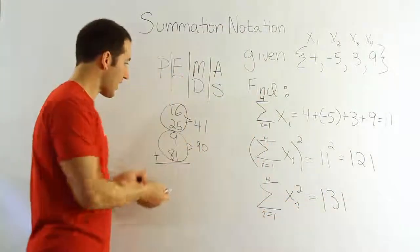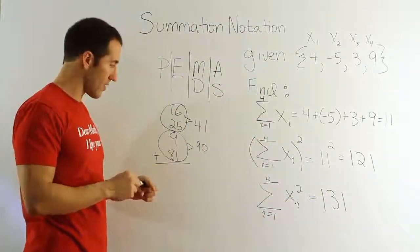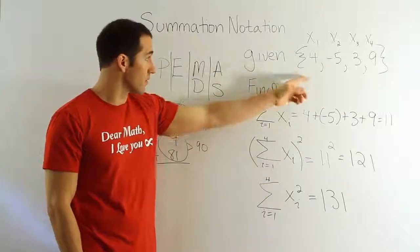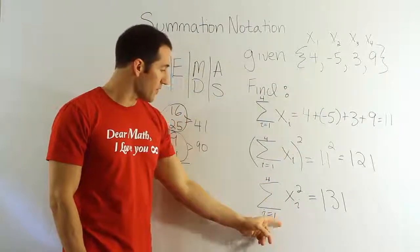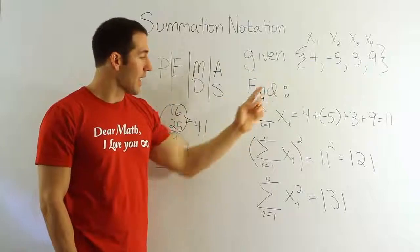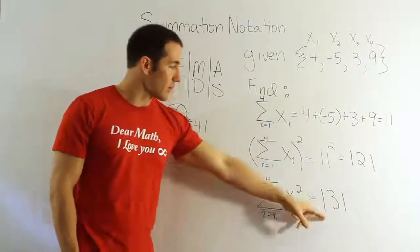You can use a calculator to add these up if you want. That's fine. All that matters, though, is that you square each of the values first. Square every value from the first value to the fourth value in your list, and then add them up, and you'll get the answer 131.